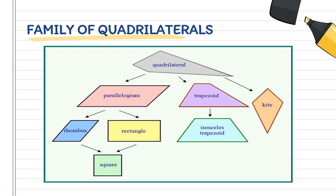Now, let's look into the picture. This is the family of quadrilaterals. Under quadrilaterals, we have our parallelogram, trapezoid, and kite.